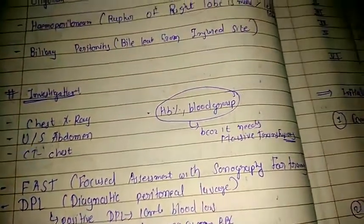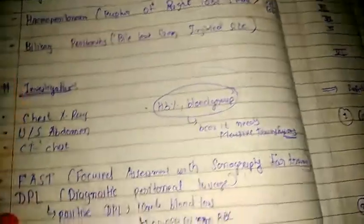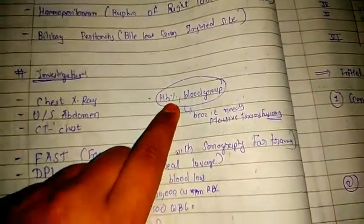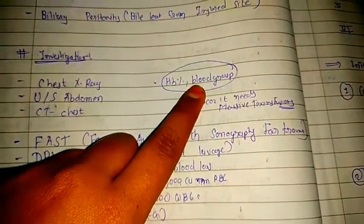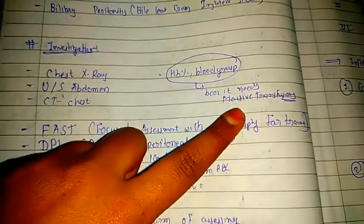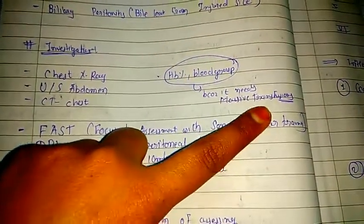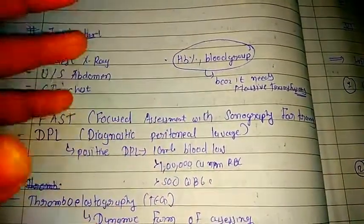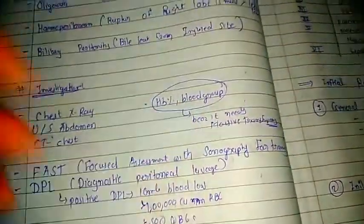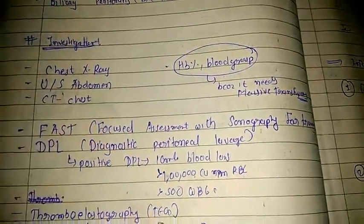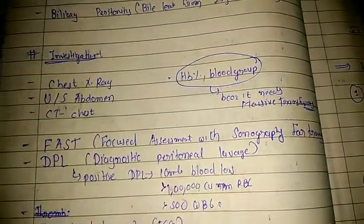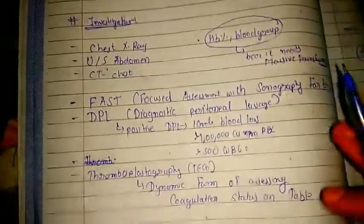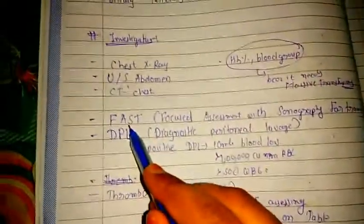These investigations are common in many injuries. We also go for hemoglobin and blood grouping. Blood group is needed because massive transfusion may be required in liver injury, so knowing the patient's blood group allows us to provide compatible blood for transfusion.